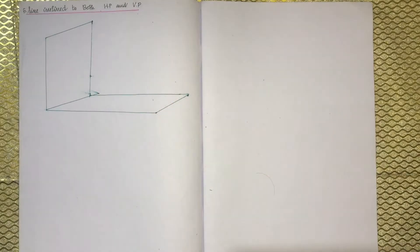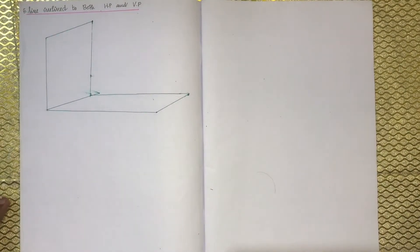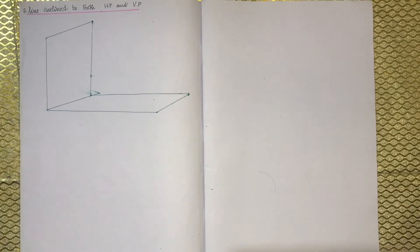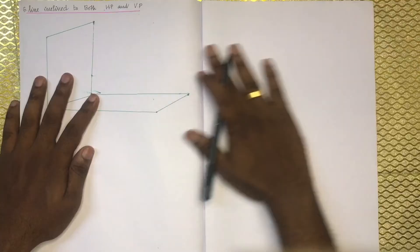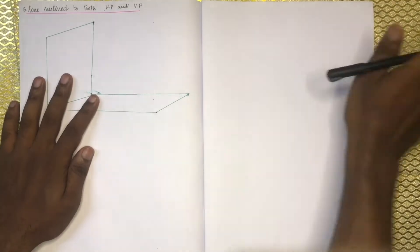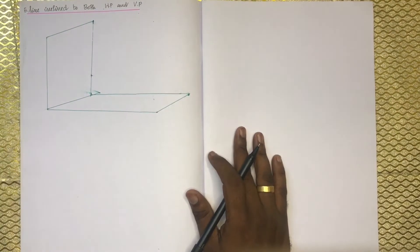On the other hand, for HP and VP, one line was inclined to HP and VP. I did a few videos before. There will be two videos. So this is the basic case: the line is inclined to both HP and VP.